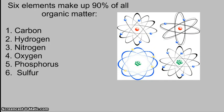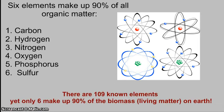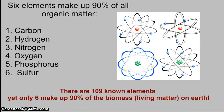When we take a look at organic matter, 90% of all organic matter is going to be made up of six elements: carbon, which is what organic matter is referred to, hydrogen, nitrogen, oxygen, phosphorus, and sulfur. Although not all organic matter has all of them. We have 109 known elements, yet we only use six to make 90% of all the biomass or living matter on Earth.